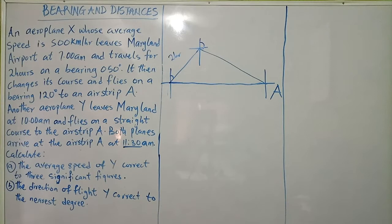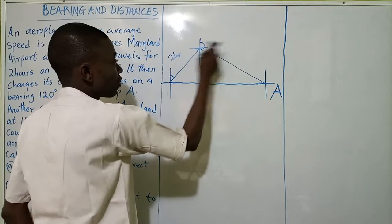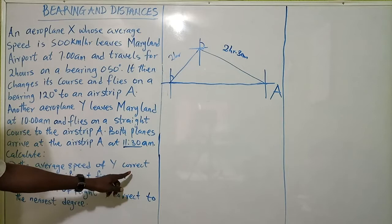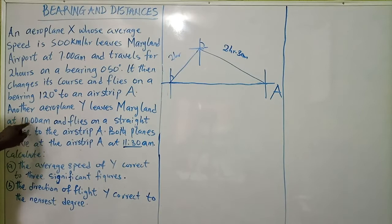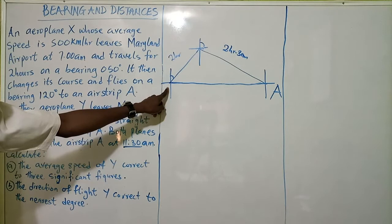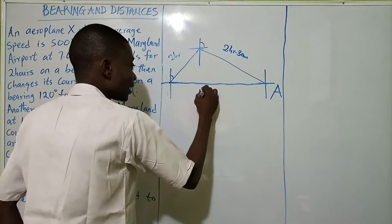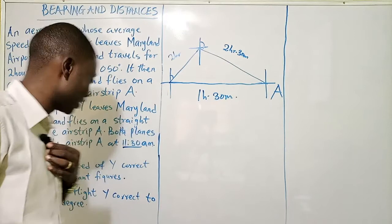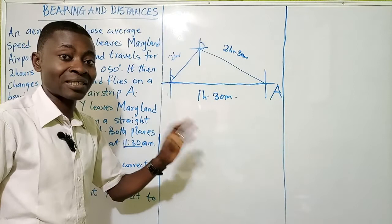We need to calculate the average speed of Y correct to three significant figures. The first leg is two hours; from 9 am to 11:30 am is two and a half hours. To calculate average speed we need to know the distance, since average speed equals distance over time. Plane Y left Maryland at 10 am and arrived at 11:30 am, spending one hour 30 minutes — that is 1.5 hours — on the way. So we have the time; we just need the distance.